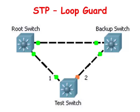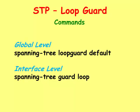Loop Guard should never be used with BPDU Guard or PortFast, and it works best when it's installed on every switch in the network. The command 'spanning-tree loopguard default' configures spanning tree loop guard globally on a switch, while 'spanning-tree guard loop' configures loop guard on individual interfaces.